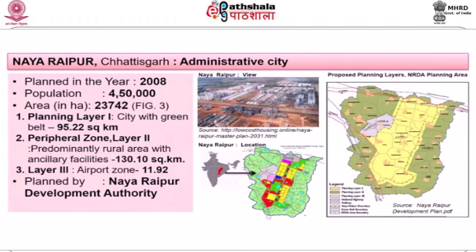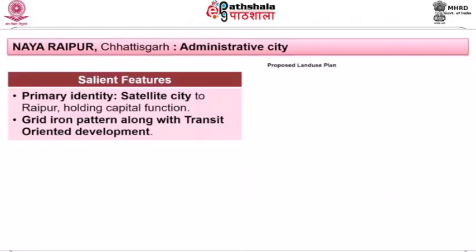Now we come to Naya Raipur in Chhattisgarh, which was planned in the year 2008 with a population of four and a half lakhs and an area of 23,742 hectares. From the map you can see there is planning layer one — a city with a green belt; layer two — a predominantly rural peripheral zone with ancillary facilities; and layer three — the airport zone.